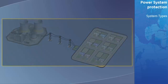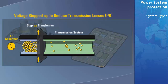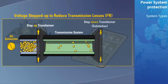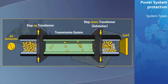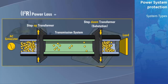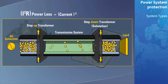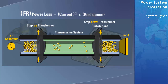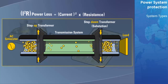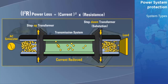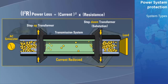Once generated, the voltage is fed to step-up transformers for transmission to reduce the I-squared R losses. And then at the substation, it is stepped down for distribution. Given that the power loss during transmission is equal to the current squared flowing through the transmission line times the resistance of the transmission line, the step-up transformer increases the voltage level, thereby reducing the current, resulting in an overall reduction of power loss during transmission.